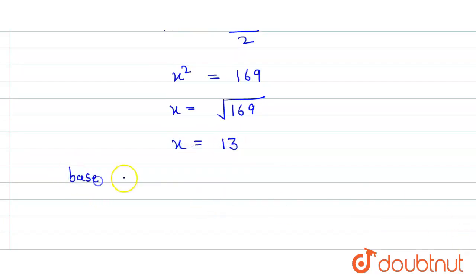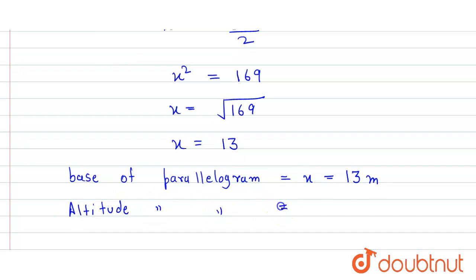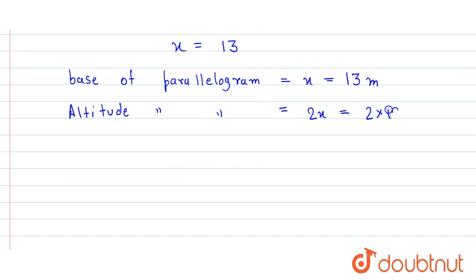So the base of the parallelogram is equal to x, which is 13 meters. And the altitude of the parallelogram is equal to 2x, which is 2 × 13 = 26 meters. So that's our answer.